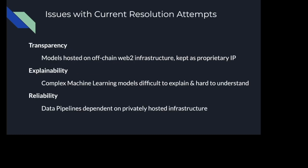Issues with the current attempts at scoring addresses on-chain: first is transparency — models are hosted off-chain on Web2 infrastructure and kept as proprietary. Second, explainability — these are complex machine learning models that are difficult to explain, hard to understand, and even tougher to iterate upon. Also readability — data pipelines are dependent on privately-hosted infrastructure. Ideally, a truly DeFi-native credit score should be a public good that's accessible to all at any time by the nature of the protocol.